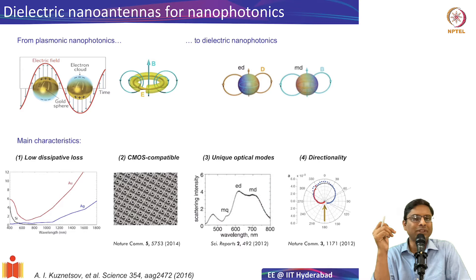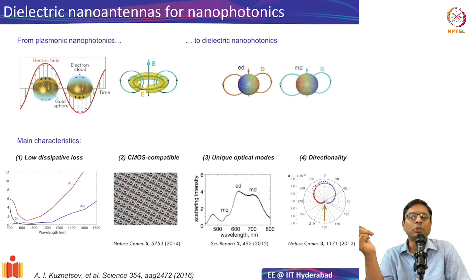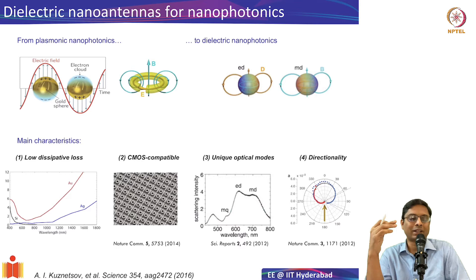Another advantage of dielectric materials compared to metals is CMOS compatibility. We can use traditional foundry equipment in clean rooms, so patterning quality can be much better. Patterning metal requires lift-off or focused ion beam milling, which can be tricky and is not scalable. For dielectric structures, standard CMOS techniques work very easily, and in principle these structures can be fabricated in standard fabs.